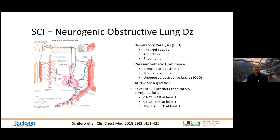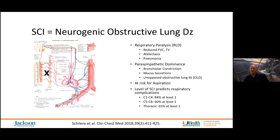Part of what we deal with after spinal cord injury, in addition to restrictive lung disease, is neurogenic obstructive lung disease. This essentially involves parasympathetic dominance over a blunted sympathetic nervous system, so we see increased bronchial constriction and mucus secretion — essentially unopposed obstructive lung disease, as reported by Shilero in 2018.